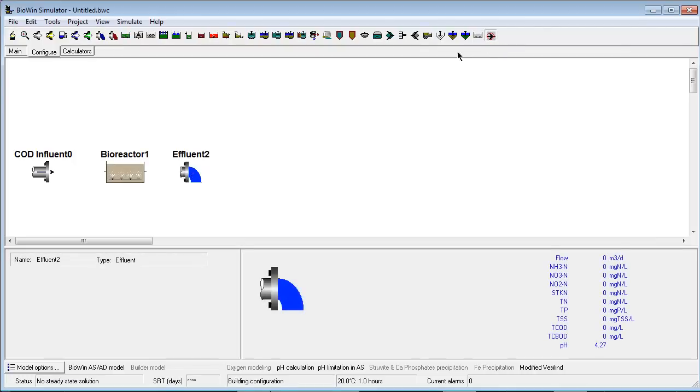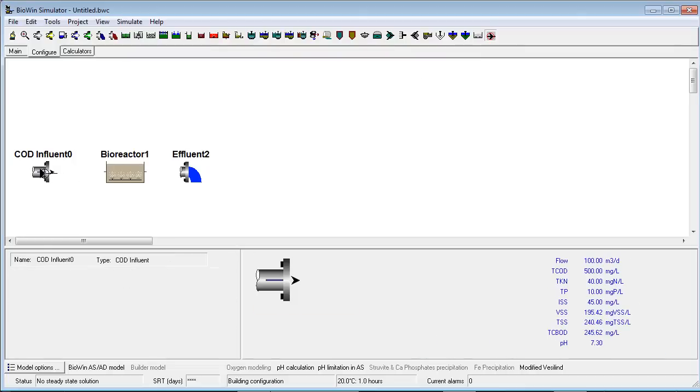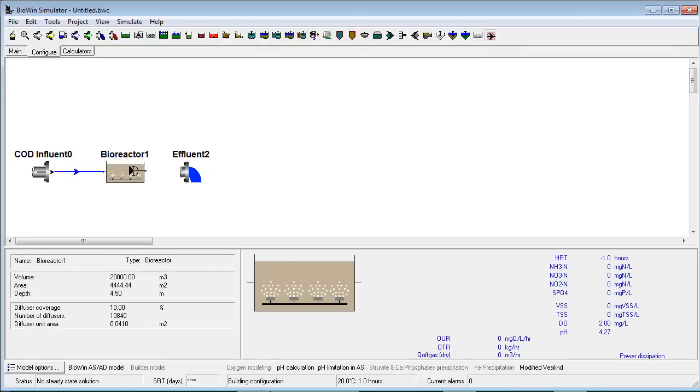Once we have the flow sheet elements we need for the plant model, we can use the pipe tool to connect these elements and specify the flow routing.